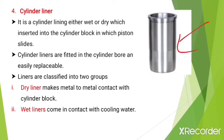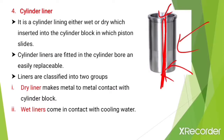The cylinder liner may be wet or dry and is inserted into the cylinder block, in which the piston slides, moving upward and downward. Cylinder liners are fitted in the cylinder bore and are easily replaceable — when worn out, they can be removed from the cylinder block and replaced with new ones. Liners are classified into two groups: dry liners, which make metal-to-metal contact with the cylinder block, and wet liners, which come in direct contact with the cooling water.